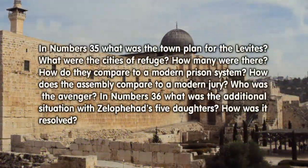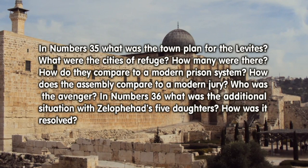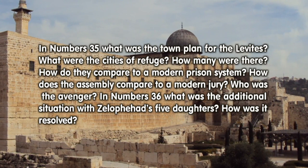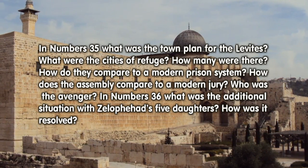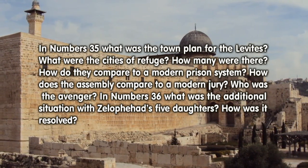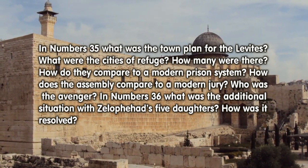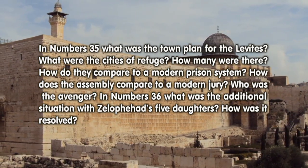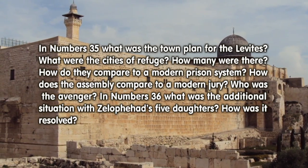In Numbers 35, what was the town plan for the Levites? What were the cities of refuge? How many were there? How do they compare to a modern prison system? How does the assembly compare to a modern jury? Who was the Avenger?